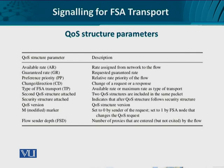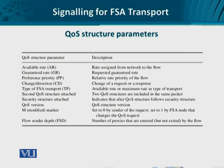Then we have the flow sender depth. When an end-to-end request is sent from the end host to the FSA network, it can enter a network which has proxies inside. Whenever a network with a proxy server is entered, the flow sender depth is set to 1 and incremented. The more proxy-based networks are entered, the higher this counter. When a domain implementing proxy service is exited, the counter is decremented accordingly.